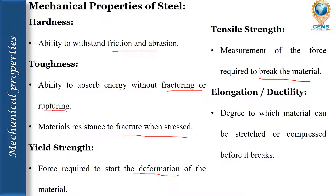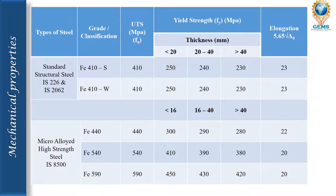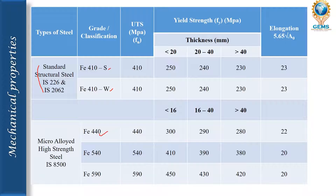Elongation or ductility is the degree to which a material can be stretched or compressed before it breaks. This table shows the ultimate tensile strength, yield strength, and elongation for different types of steel. Standard structural steels FE410S and FE410W — standard quality and weldable quality — have the same mechanical properties including ultimate tensile strength, yield strength, and elongation. The micro-alloyed high tensile strength steels have three different grades: FE410 with UTS of 440, and FE540 with UTS of 540.